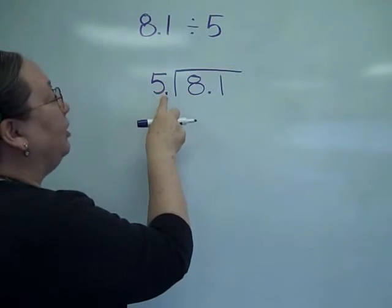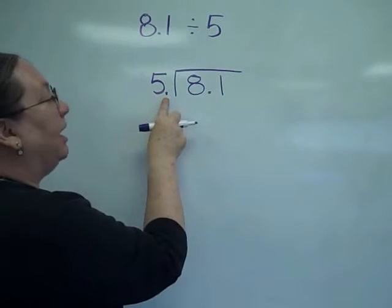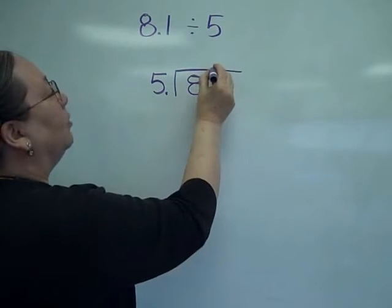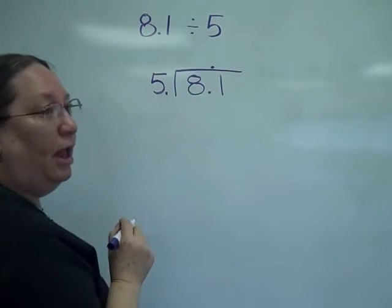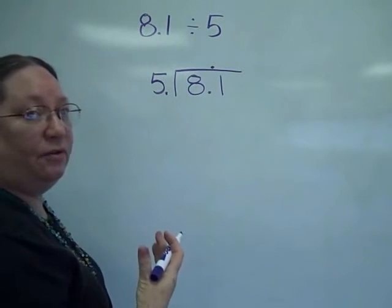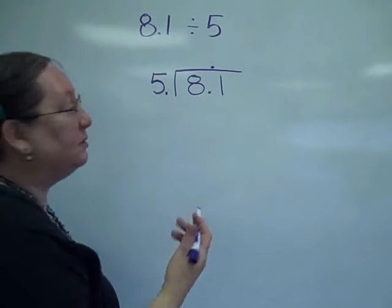What you've got then is that you don't have to move it on the outside, so you don't need to move it on the inside. It will go straight up from there. And then you are going to divide pretty much as if the decimals weren't there.